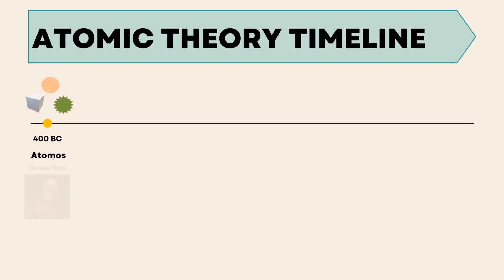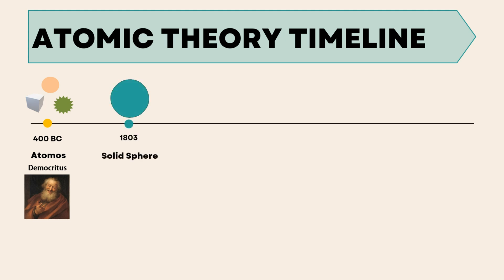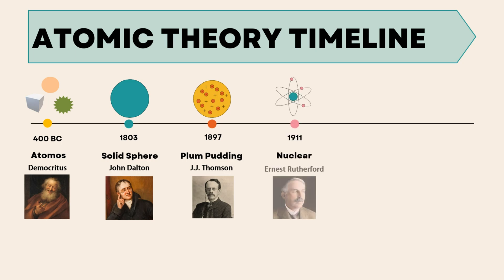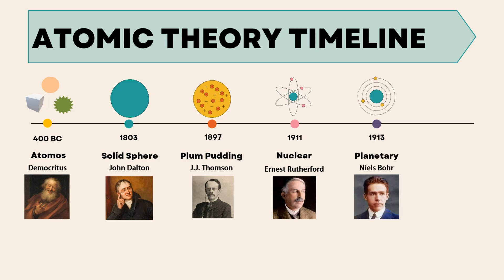Around 400 B.C., Democritus started it with the concept of atomos. In 1803, John Dalton changed things with a solid sphere model. In 1897, J.J. Thompson came with a plum pudding model. Then in 1911, Ernest Rutherford suggested the nuclear model. In 1913, Niels Bohr added the planetary model.